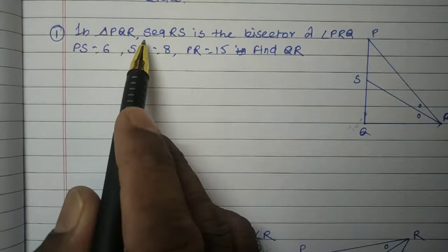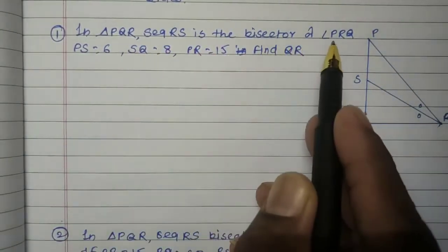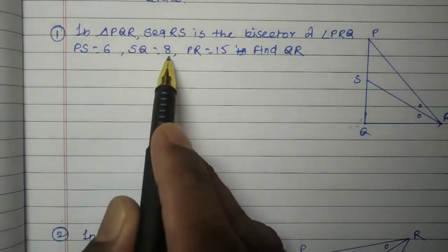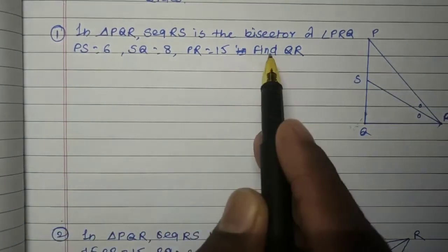In triangle PQR, segment RS is the bisector of angle PRQ. PS equals 6, SQ equals 8, PR equals 15. Find QR.